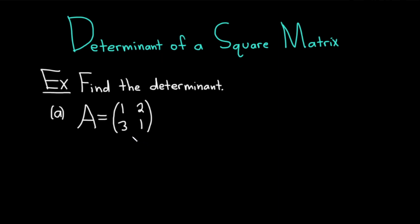Let's go ahead and do some examples of computing determinants. In part A, we have a matrix A, which is equal to the matrix with entries 1, 2, and 3, 1. This is a 2 by 2 matrix because you have two rows and two columns.